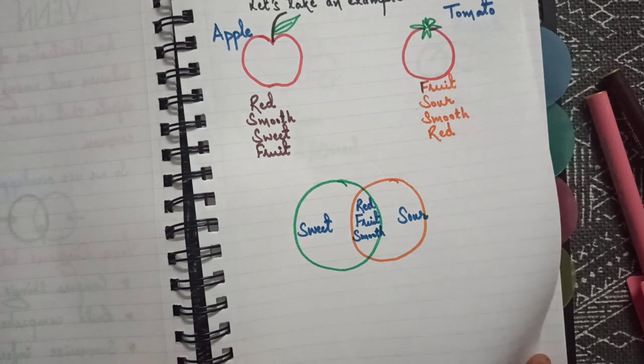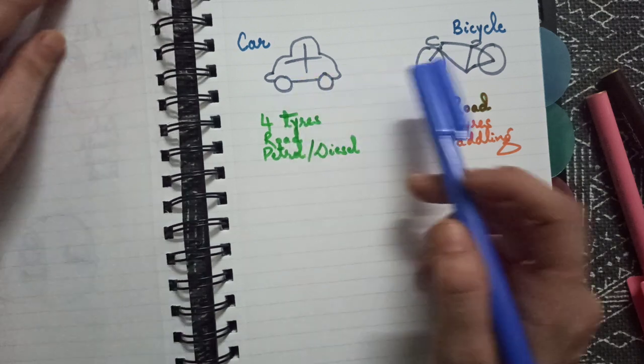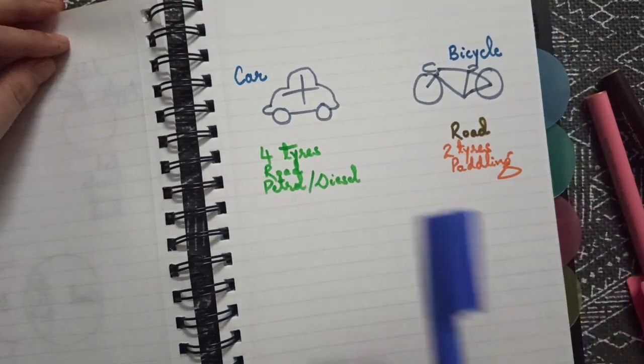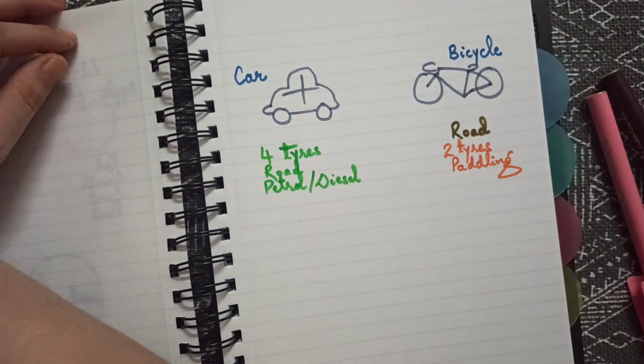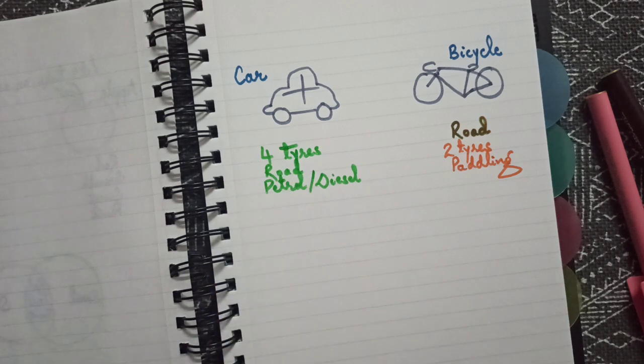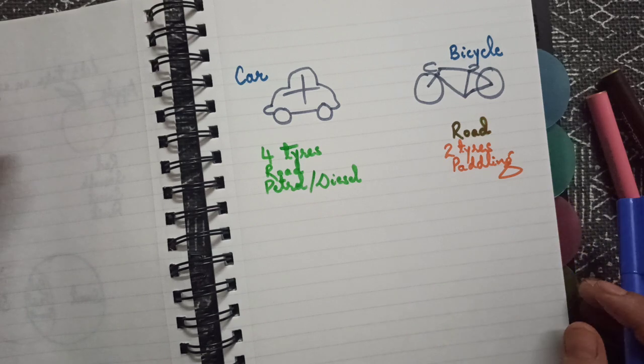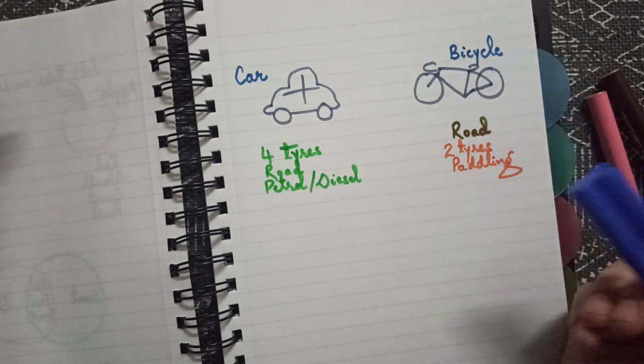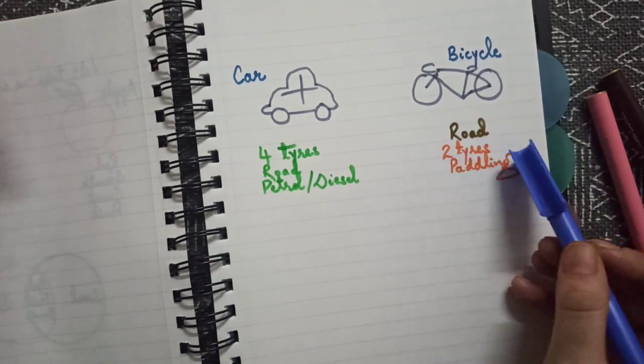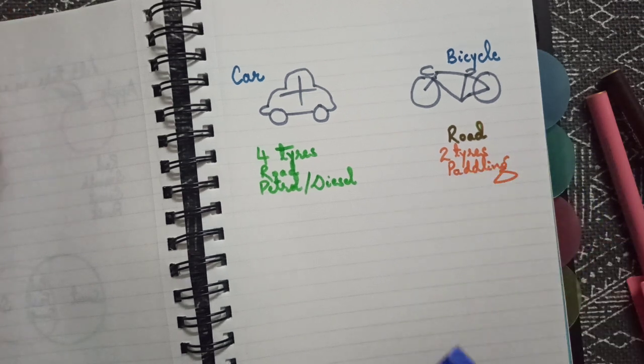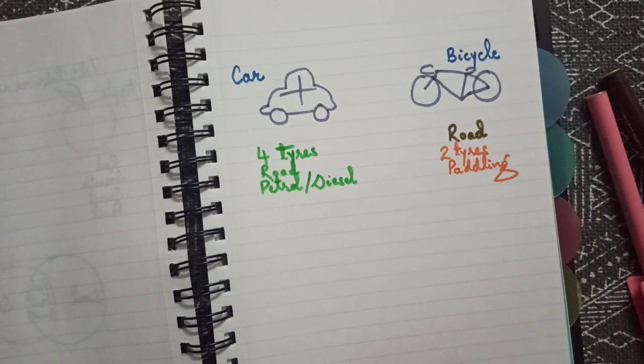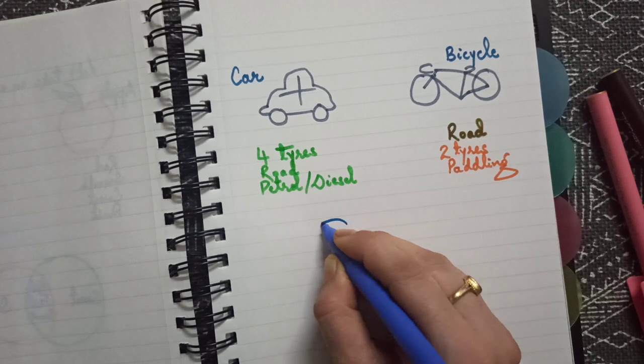One more example. Let's take car and bicycle. Car has four tires, it is road transportation using petrol or diesel.